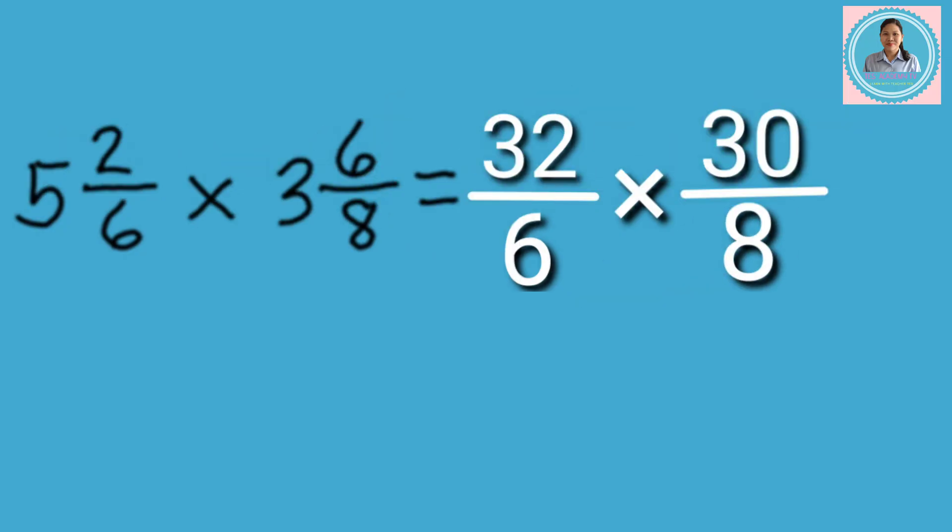Next step is to multiply the numerators and multiply the denominators. But, in this example, we will use cancellation so that we can multiply the numbers easily.